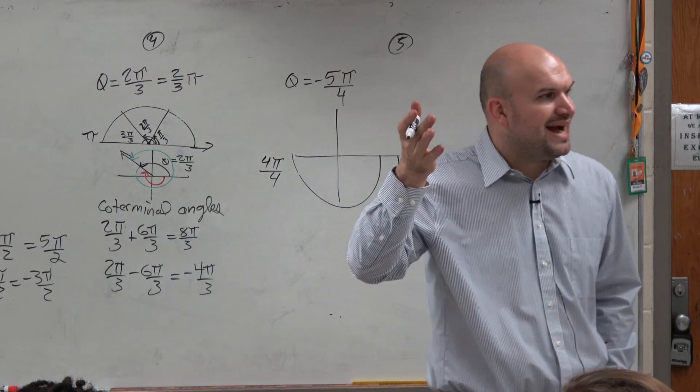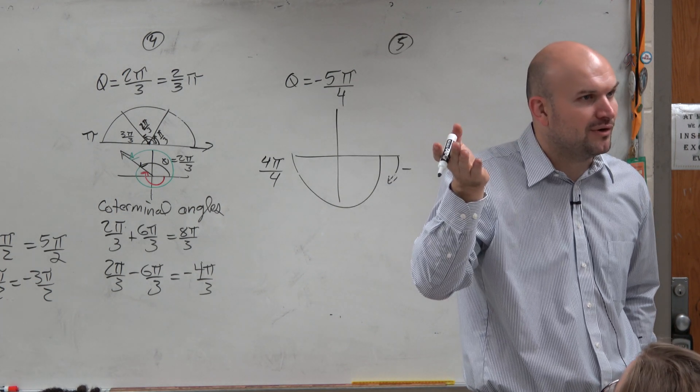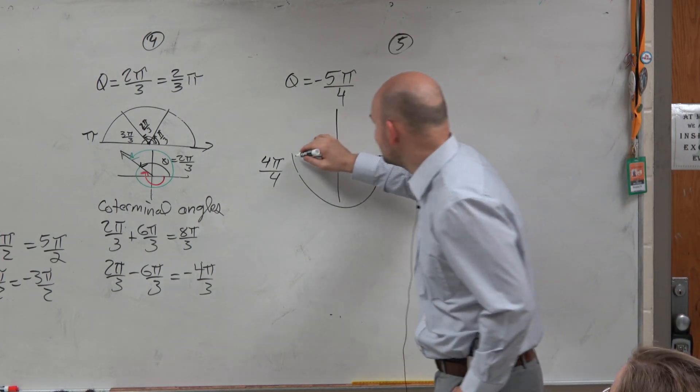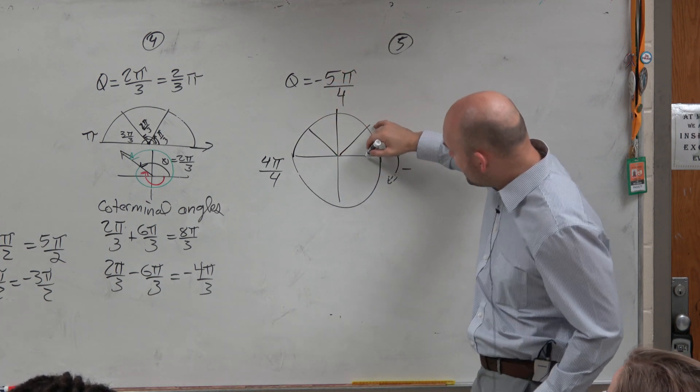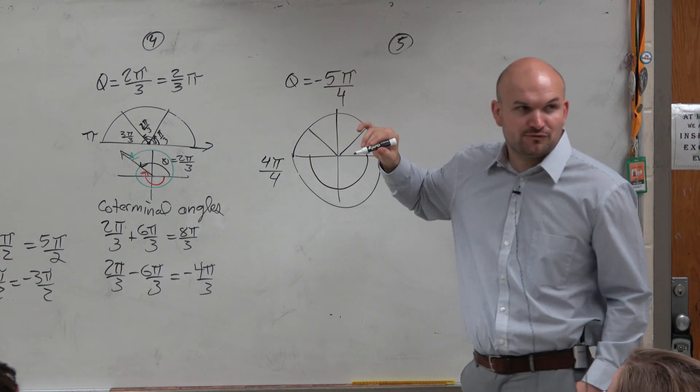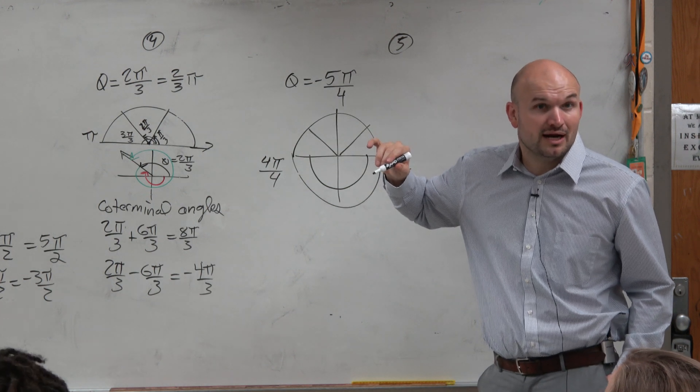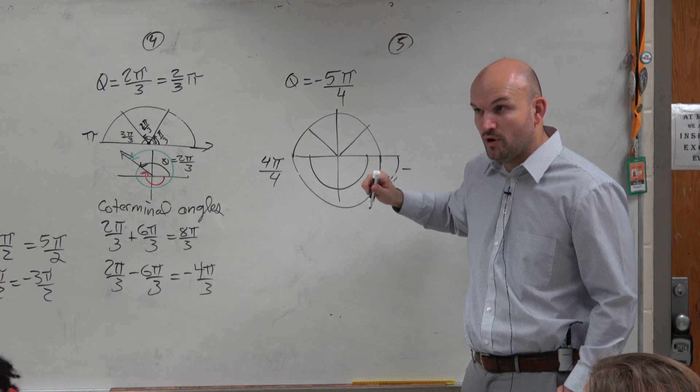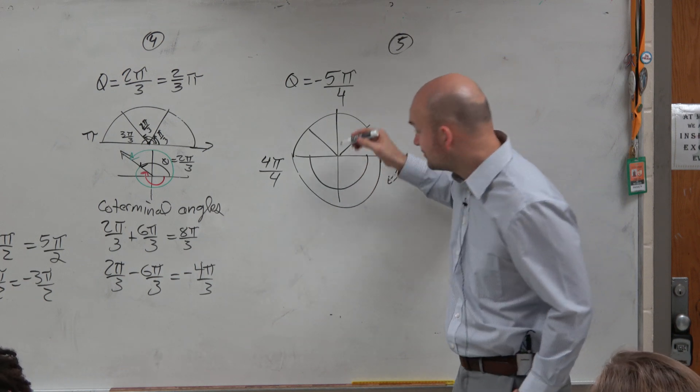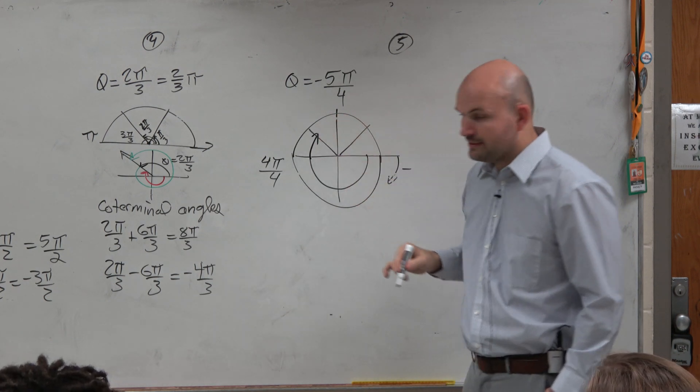So I look at my angle and I say, I just need to go to get to 5 pi over 4. So what that means is, I just need to go, like I know if I travel from here to here, I traveled 4 pi over 4, right? And I need to get to 5 pi over 4. So that means I just need to go one more fourth. There we go. Done.